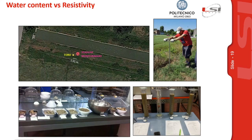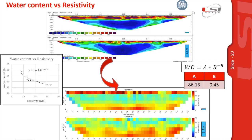It is also possible to transform the inverted resistivity section into a volumetric water content section. To do so, the user takes a core at the monitoring site, extracts samples along depth, and analyzes them in the laboratory to calculate volumetric water content. Knowing the resistivity at the exact position of every sample, it is possible to calibrate a relationship between water content and resistivity — an inverse proportionality function with two coefficients, A and B. By calibrating these two coefficients, the resistivity section can be transformed into a volumetric water content section. In the cloud software, the user simply inserts the two coefficients to automatically calculate the water content section.